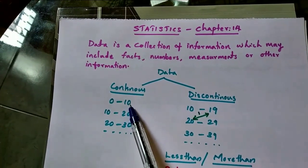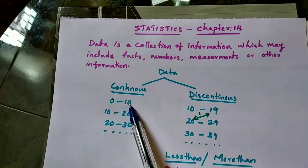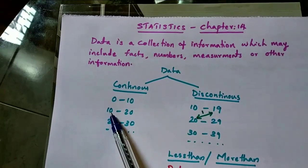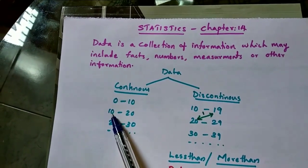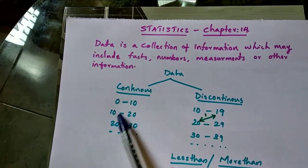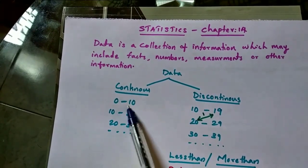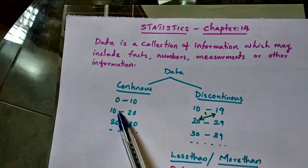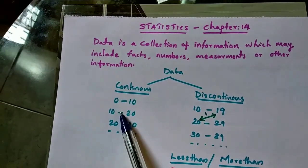Continuous means the upper limit of the first interval and the lower limit of the second interval are the same - there is no gap between the first two intervals. This type of data is called continuous data.